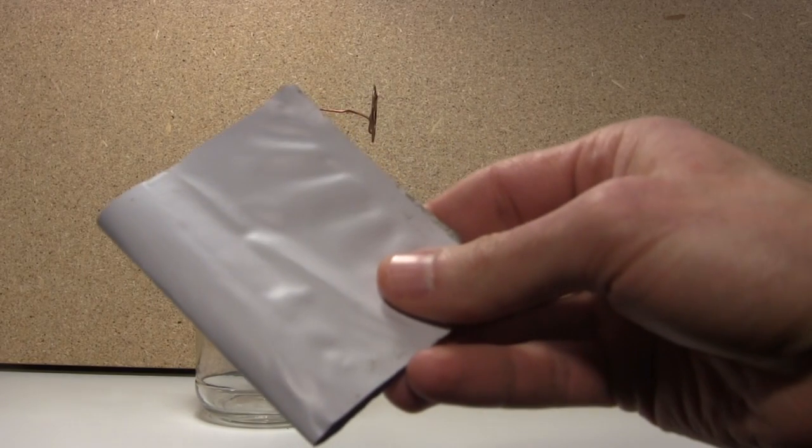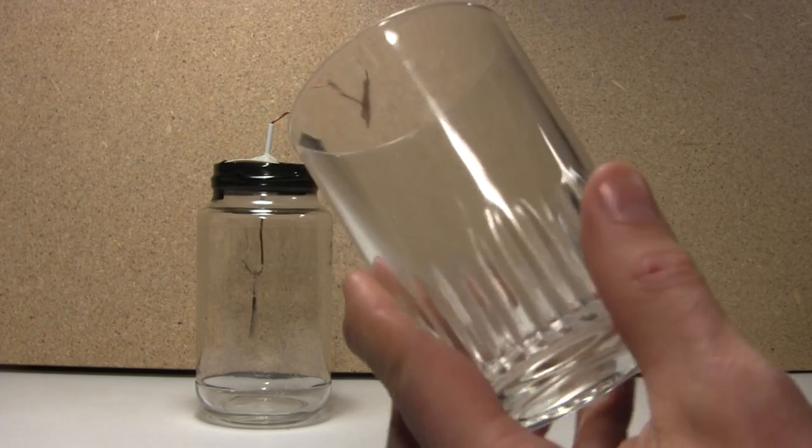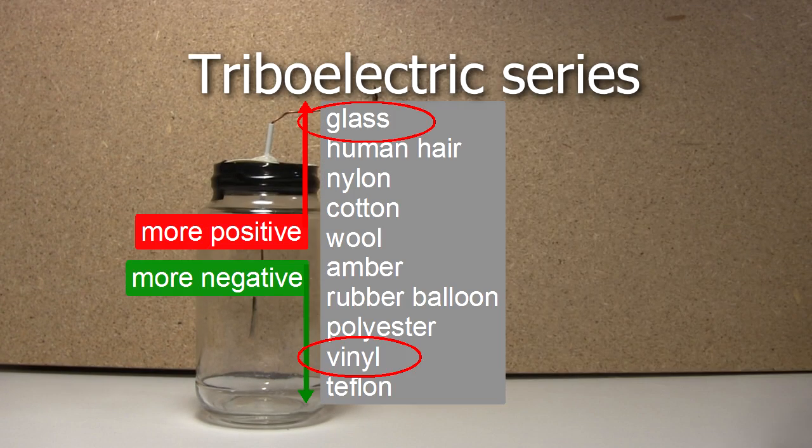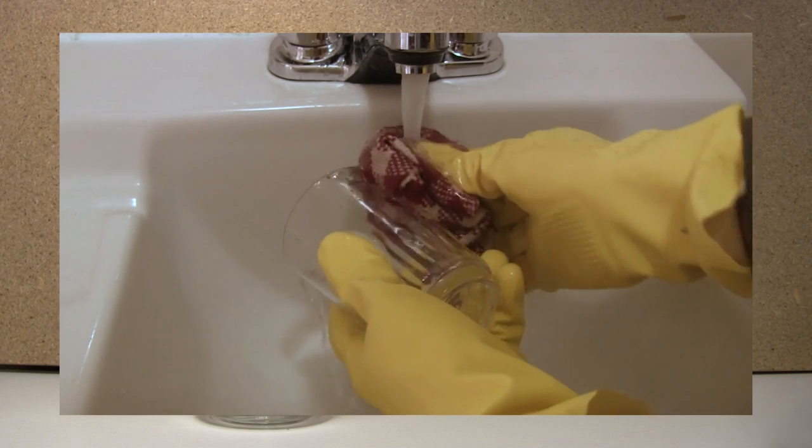Here's a piece of vinyl which I cut from some old window blinds, and here's a glass. You can see that the vinyl and glass are far apart in the triboelectric series, so they should work well together. Just make sure you clean the glass first.